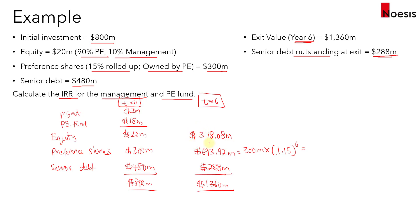Of the $378.08 million equity value at exit, we need to determine how much is attributable to management and the PE fund. Management holds 10%, which is $37.81 million, and the PE fund holds 90%, which is $340.27 million. These two figures sum to $378.08 million, and we can now calculate the IRR for each party.